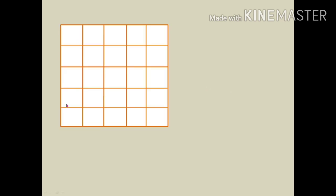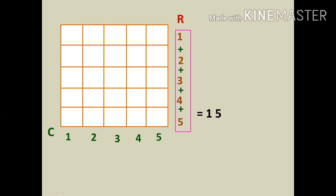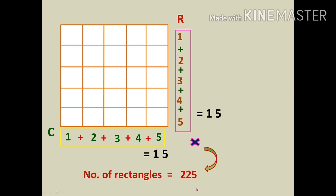Another problem: write rows and columns in series. Adding the row series gives 15, and adding the column series also gives 15 since rows and columns are the same. Multiply 15 × 15 = 225. The total number of rectangles is 225.